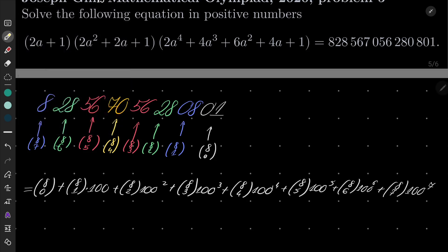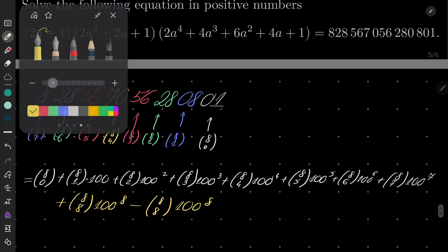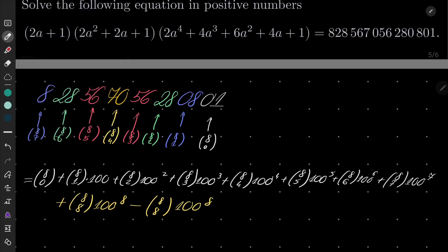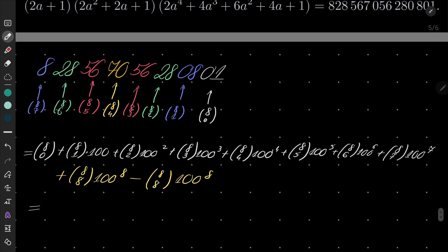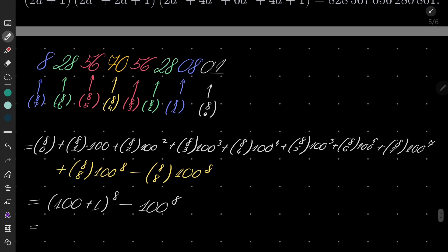But the last part is missing. But it's not a big deal, because I can always add 8 choose 8 times 100⁸ and also subtract this same number. And now the first 9 terms, by the binomial theorem, will be just (100+1)⁸. And the last part is minus 100⁸. So we have 101⁸ minus 100⁸.